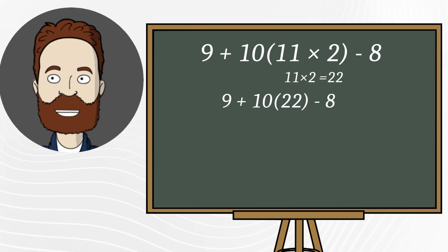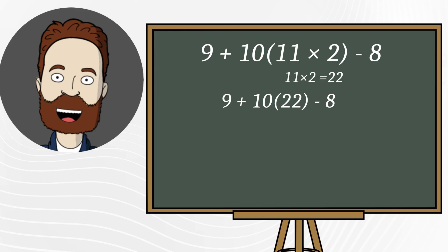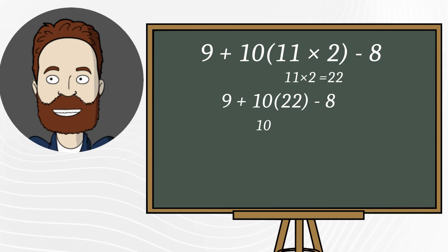Now the parentheses are gone, but notice that 10 is written right next to 22. In math, that means multiplication. So we do 10 times 22, that equals 220.